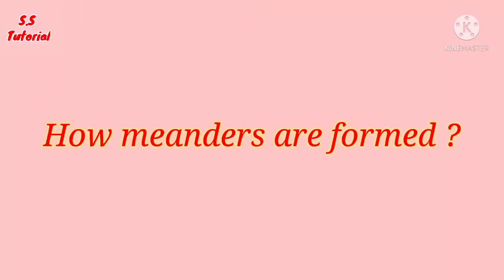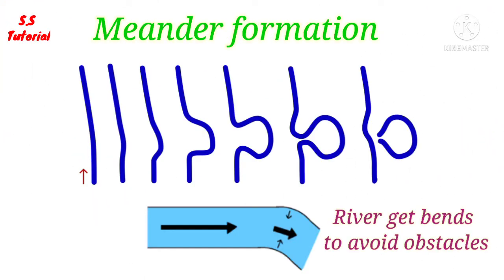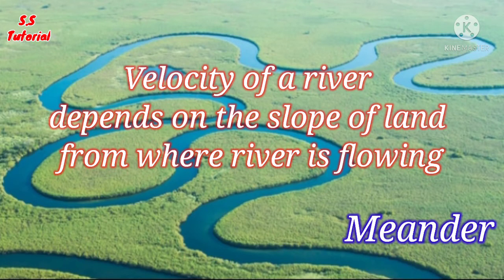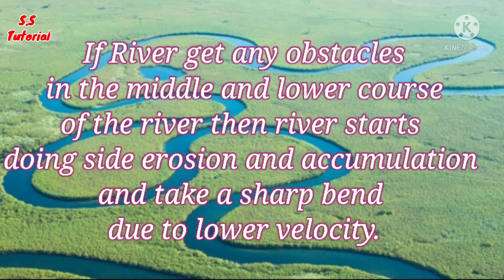Now we will know how meanders are formed. Meanders are nothing but a result of the interaction of water through a bent channel with the underlying riverbed. The velocity of the river is very low as the slope of the land is low in the middle and lower course of the river. In this situation, if the river is slightly obstructed by any obstacle, then the river flows by turning its course through side erosion and accumulation. To avoid that obstacle, this spiral motion or curved channel of a river is called a meander.